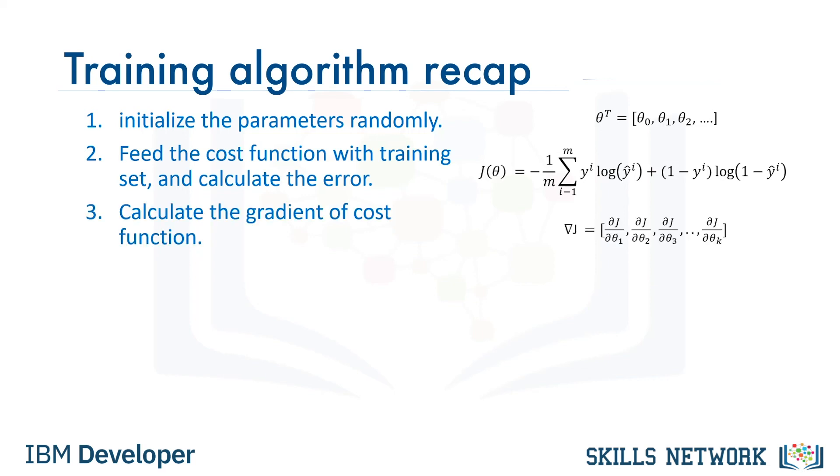Step 3. We calculate the gradient of the cost function, keeping in mind that we have to use a partial derivative. So, to calculate the gradient vector, we need all the training data to feed the equation for each parameter. Of course, this is an expensive part of the algorithm, but there are some solutions for this.